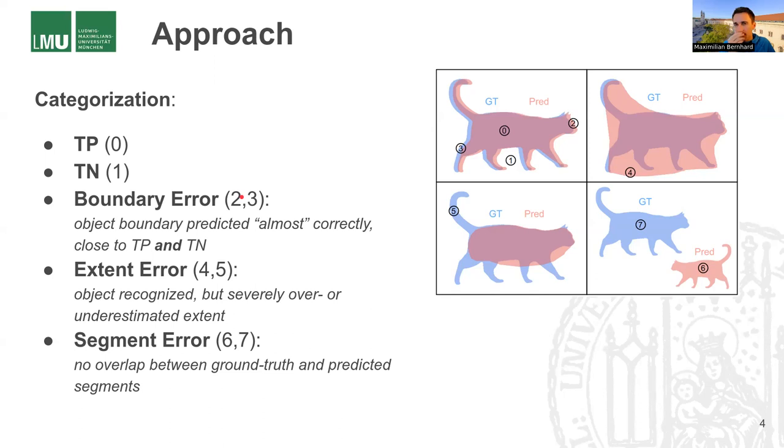However, the delineation is not perfect. So you can see like here in position two or three, it's just the boundary that was not predicted correctly.